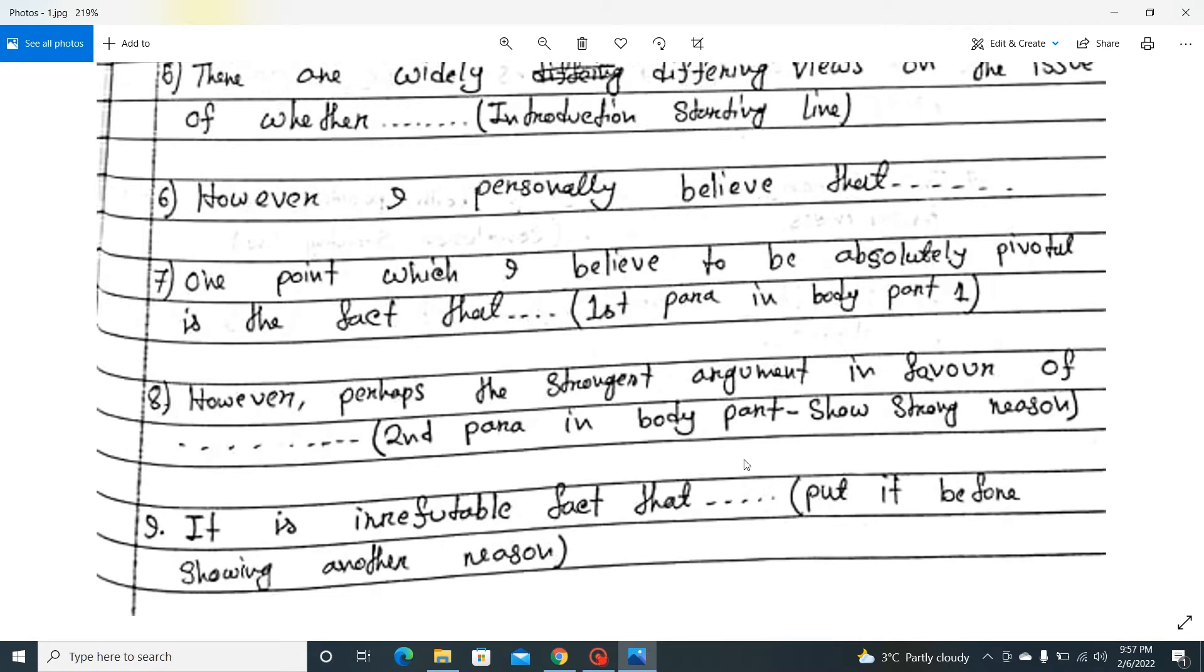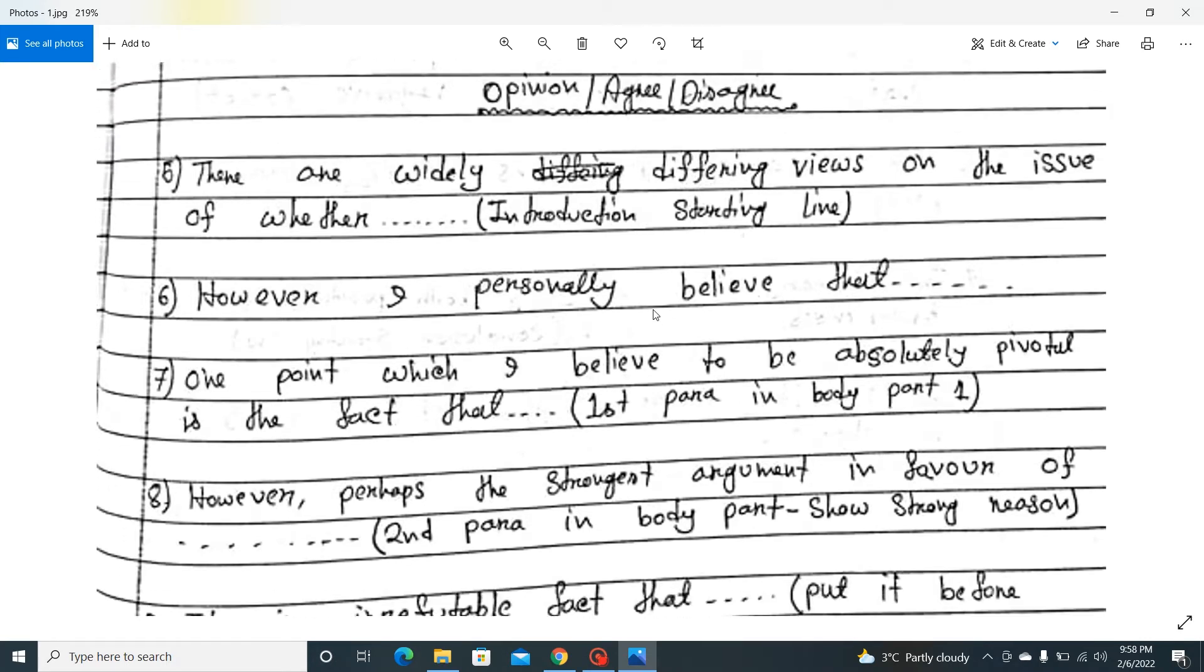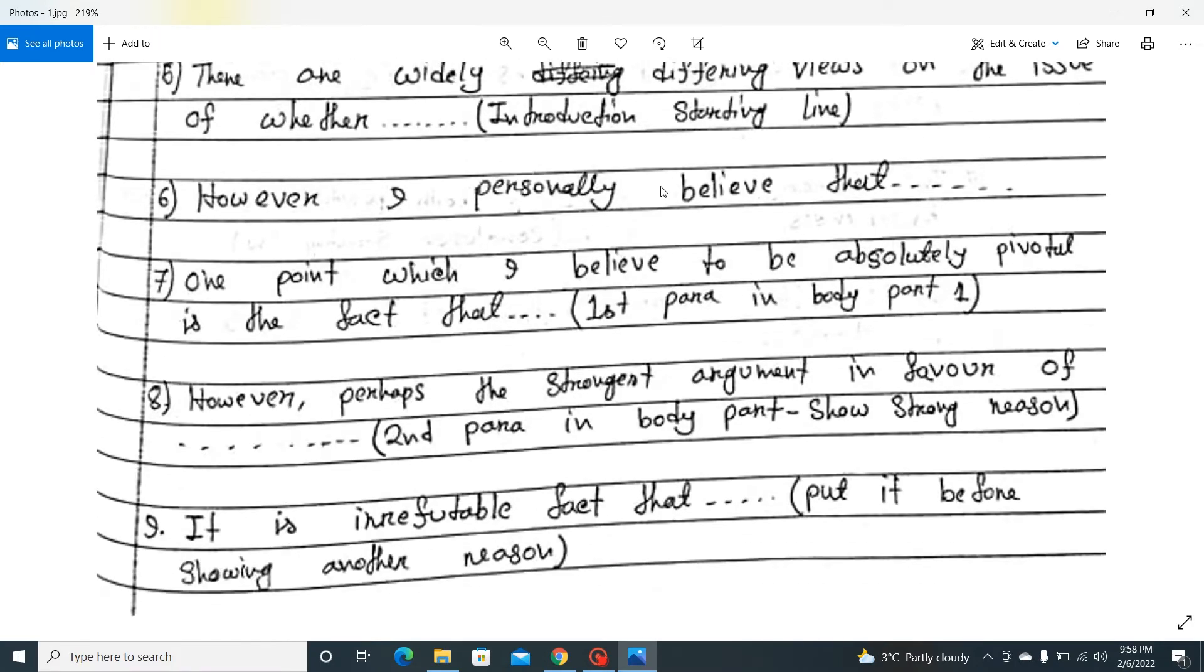However, perhaps the strongest argument in favor of, second paragraph. Again, another fact. But a strong reason. We just use it. However, perhaps the strongest argument in favor of. So I have written a phrase at the bottom. I have written a strong word, however, which is a linking word. And then it is a pivotal one point which I believe to be absolutely pivotal. Yeah, yeah. Okay. So if you use a different word, just use a generic line, just not just a generic, just a quality full of it. That's it. But if you write well, you don't need to use these things.